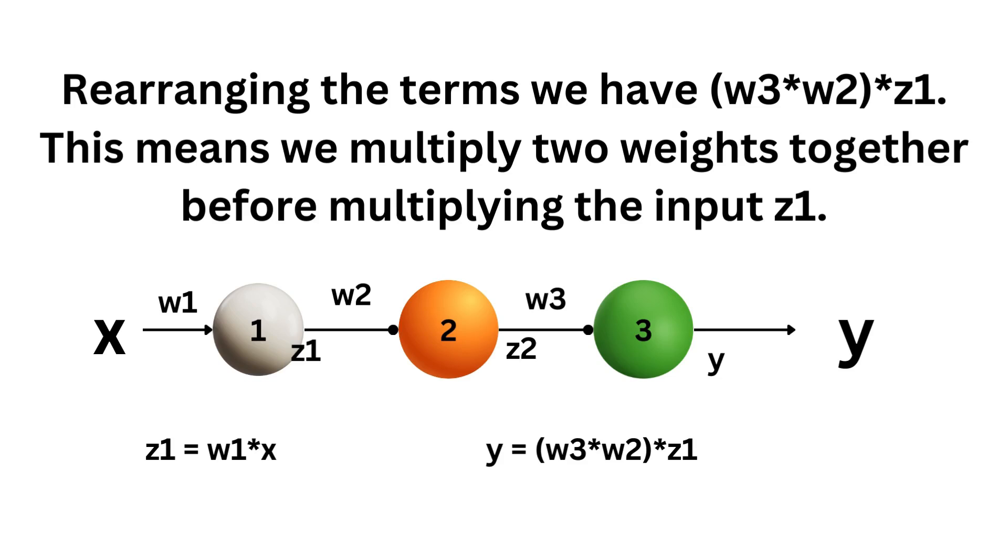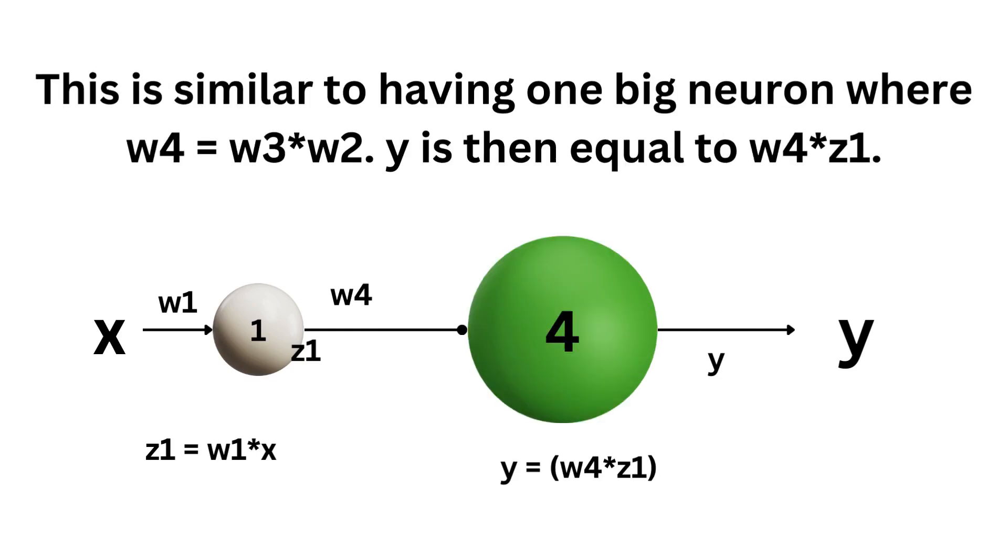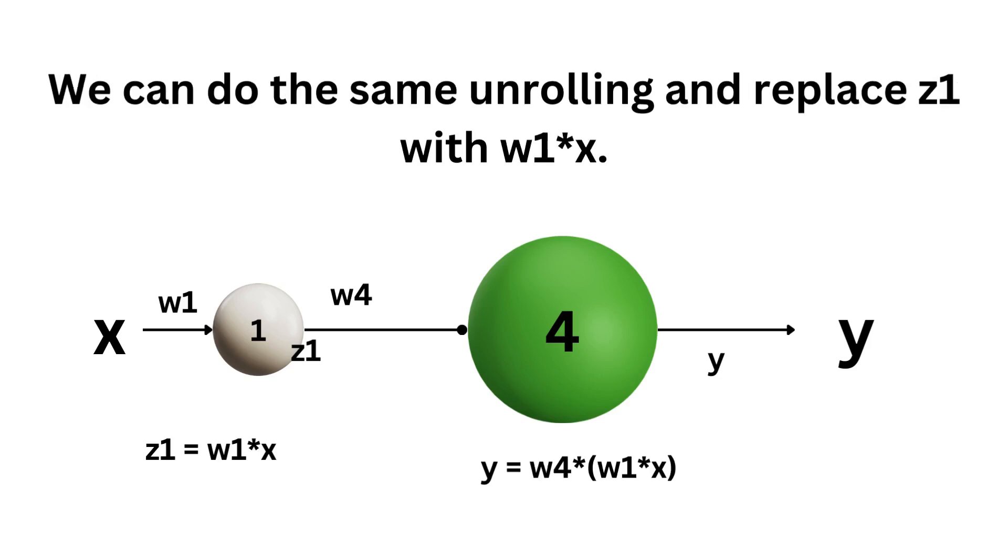This means we multiply two weights together before multiplying the input z1. This is similar to having one big neuron where w4 equals w3 times w2. y is then just equal to w4 times z1. We can do the same unrolling and replace z1 with w1 times x.